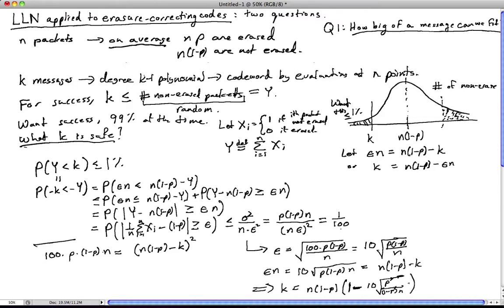So let's look at this. We have an answer now. It tells us that k is basically n times 1 minus p, the average number of non-erased symbols, except we have to take it down a bit. We have to reduce it to be safe. We have to add a safety margin. The safety margin as a proportion scales down like 1 over square root of n. It's 1 minus 10 square root p over 1 minus p times n. So we have a formula. But to understand the effect of this, how important is this effect? Let's try an example.